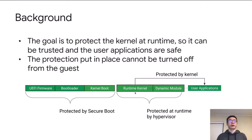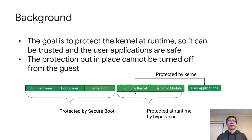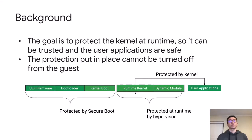If the kernel has not been modified in any way and is running as expected, user applications can feel much safer. One more important thing: the protection we put in place should not be able to be turned off from the guest. Because a rootkit can gain the highest privilege, and if it can change settings in the guest to turn off the protection, then the protection is not that strong.